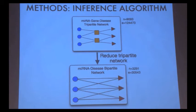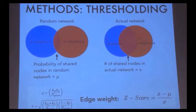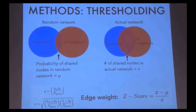Next, I simplified this tripartite network to the final desired micro-RNA-to-disease network using statistical inference. For every micro-RNA and disease node, I compared the probability of these being connected if the network was random, compared to the actual number of shared nodes in the network. I used these values to compute a z-score, assigned all micro-RNA-to-disease edges as the z-score, and eliminated all edges with a z-score less than 3.